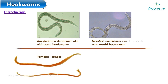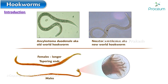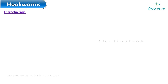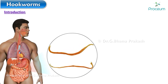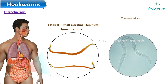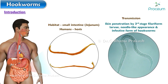Females are longer than males. Females have tapering ends, and males have coiled spicules at their posterior ends. Hookworms have the human small intestine as their habitat, and humans are their host. Transmission is through skin penetration by third-stage filariform larvae, which have a needle-like appearance and are the infective form of hookworms.